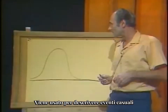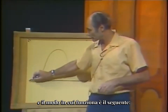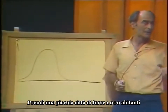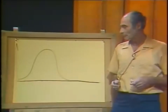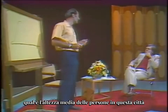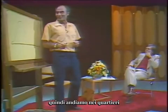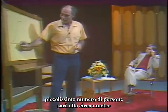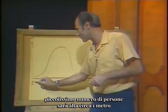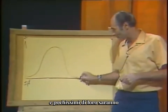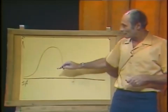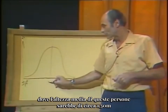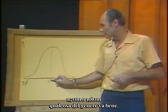The bell curve is used in describing random events. Let's take the following situation: take a little town that has maybe 1,000 people in it, and we have this great desire to find out what the average height of people in this town is, and therefore we go out with a yardstick and start measuring these people. We find that very few people will be, say, three feet tall, and very few of them will be maybe seven or eight feet tall. The bulk of the population will be right somewhere here - the average or mean height would be about five feet and six or eight inches.